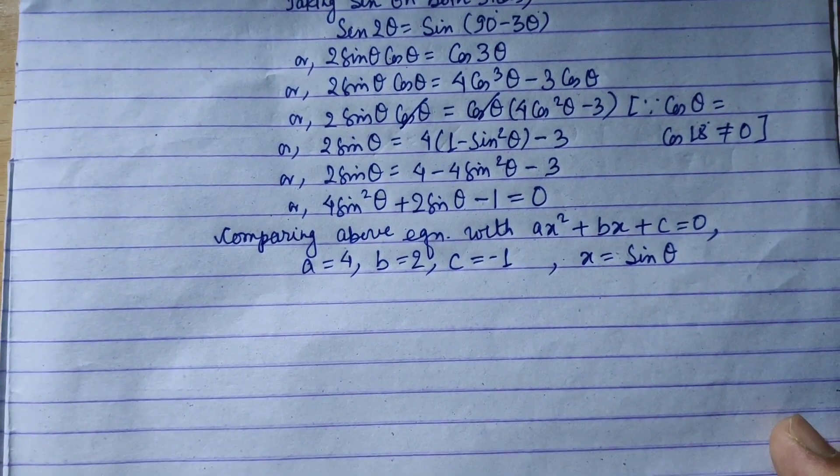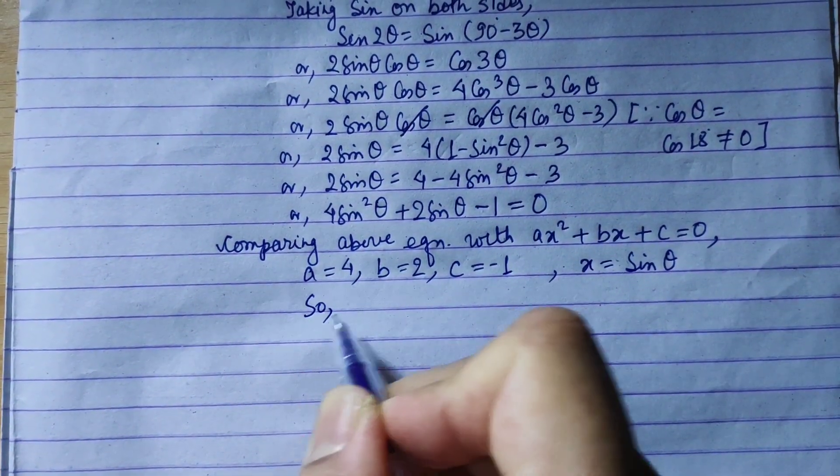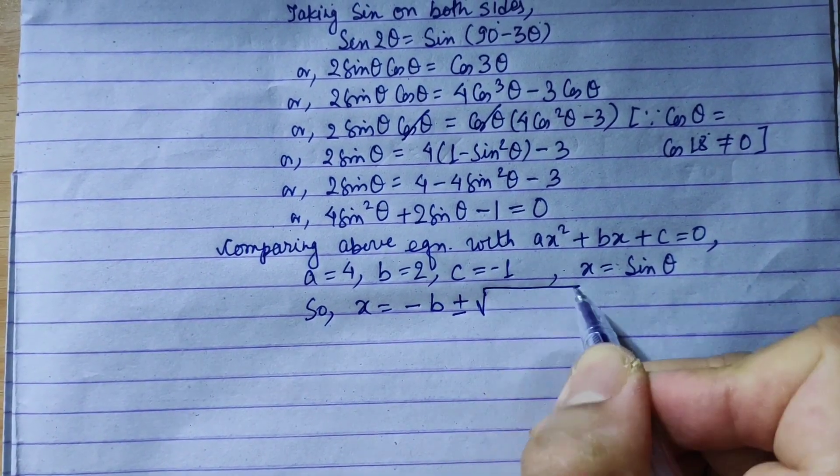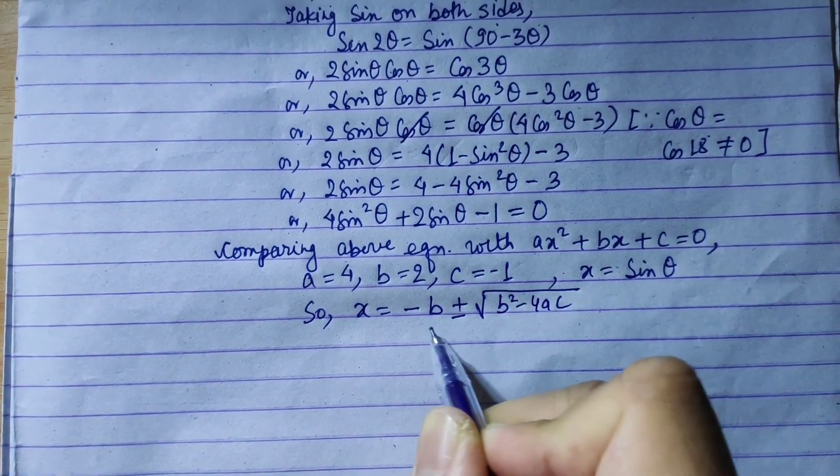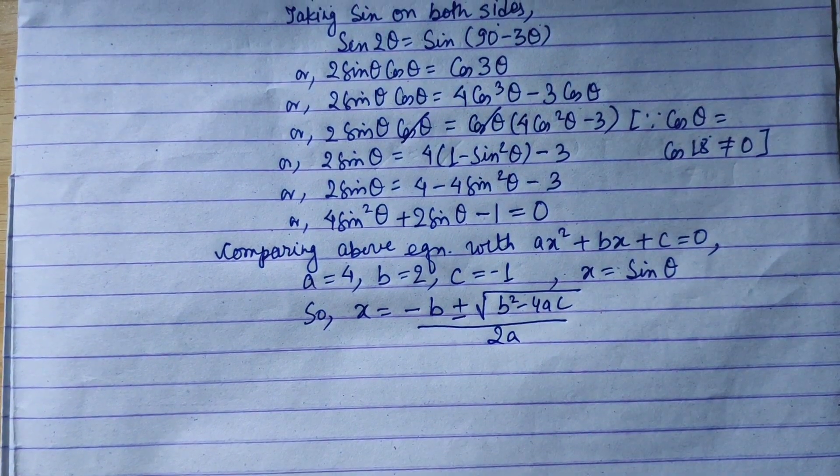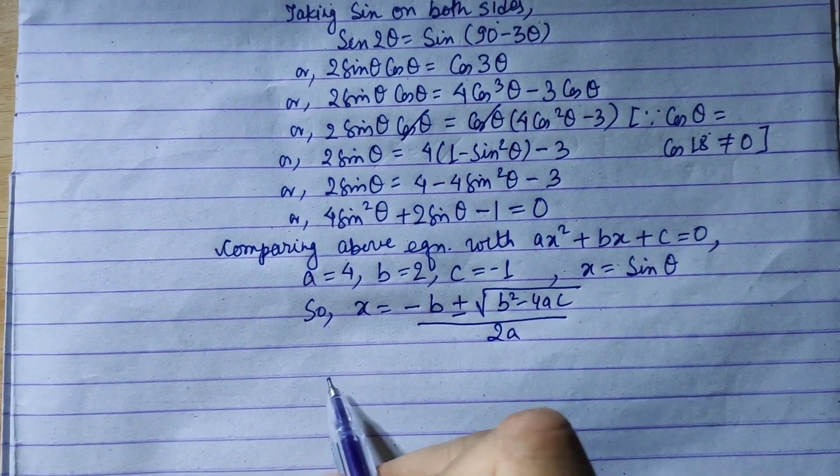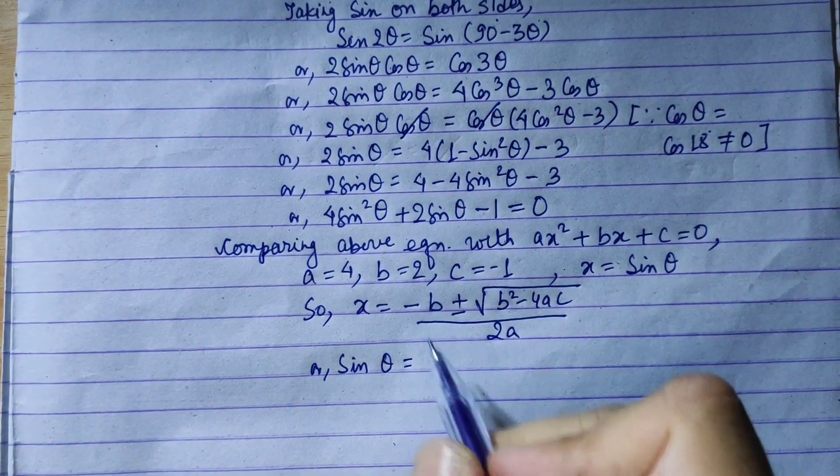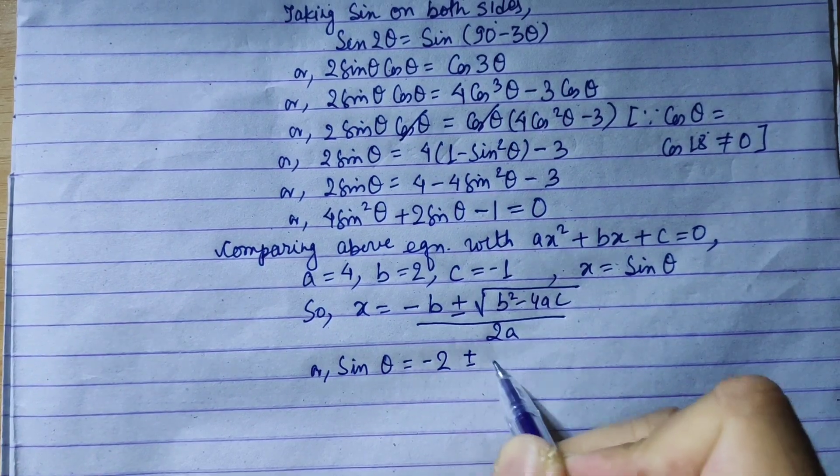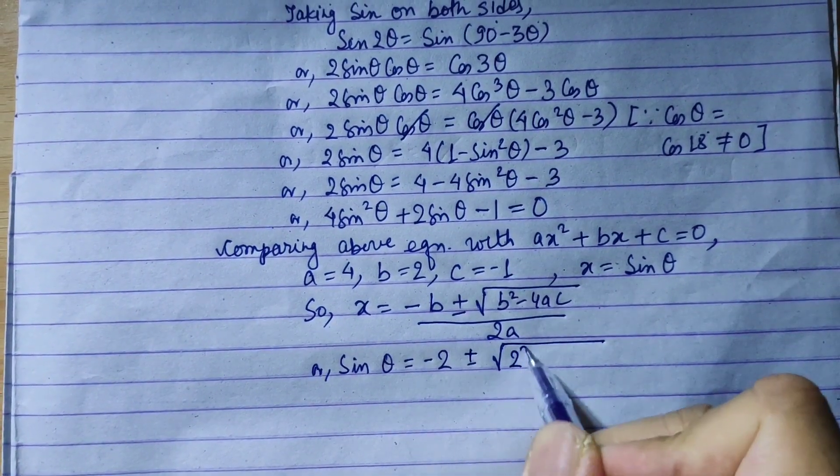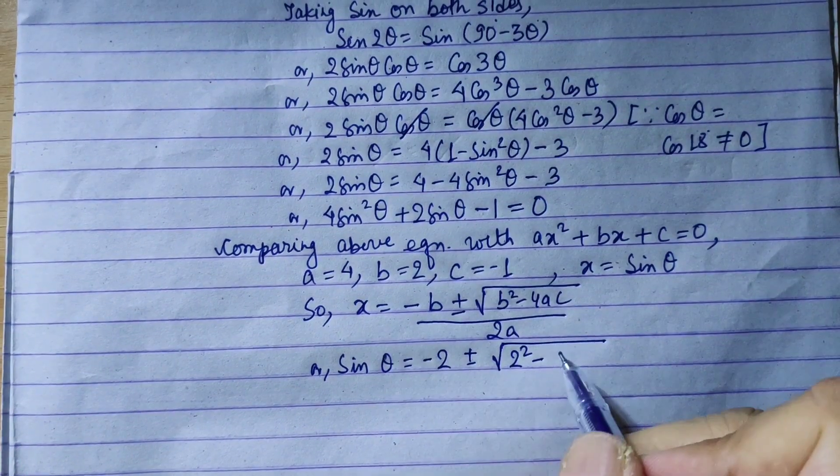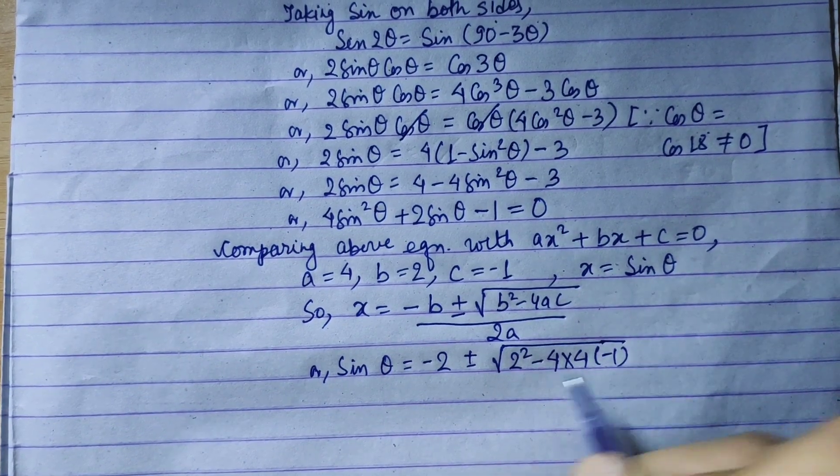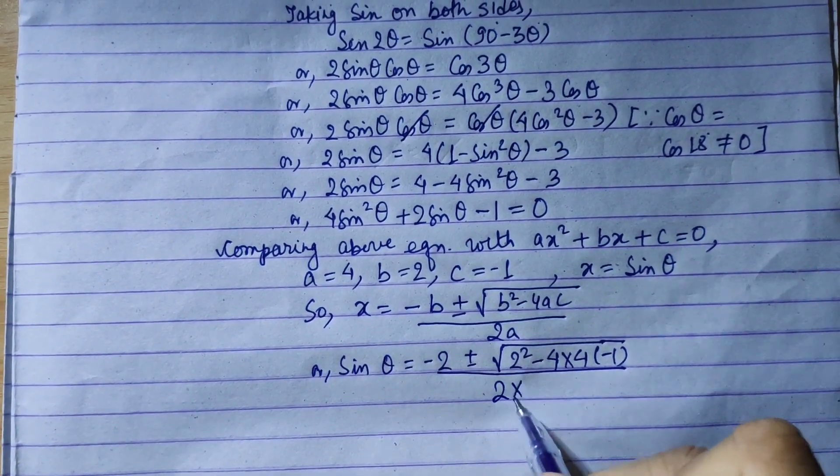Now we have a quadratic formula. So x equals minus b plus minus under root b square minus 4ac whole upon 2a. So sin theta equals minus 2 plus minus under root 4 minus 4 into 4 into minus 1 whole upon 2 into 4.